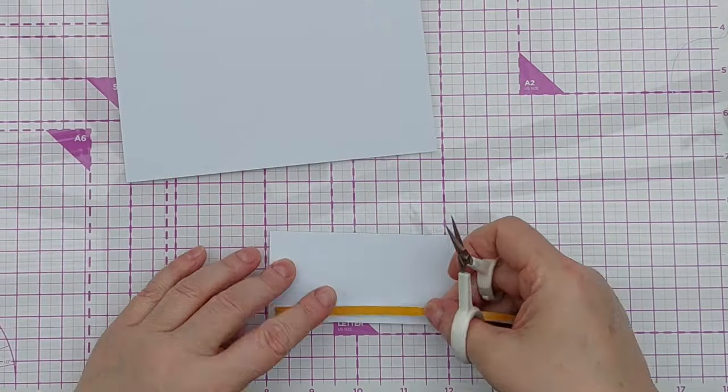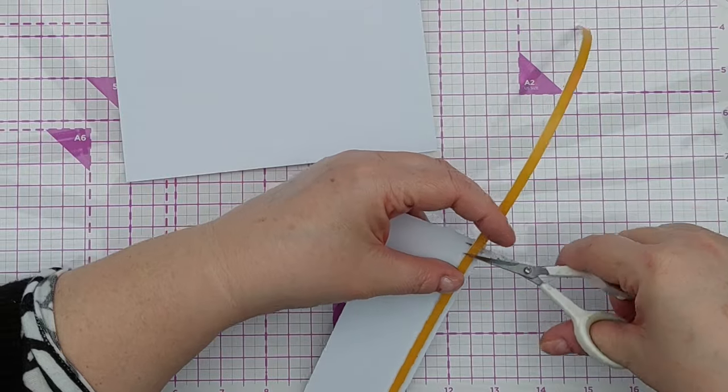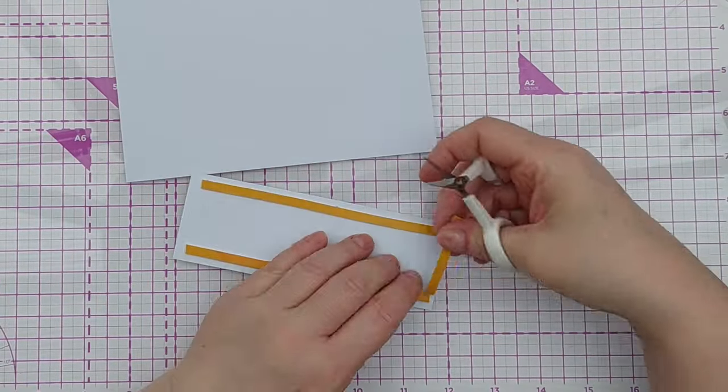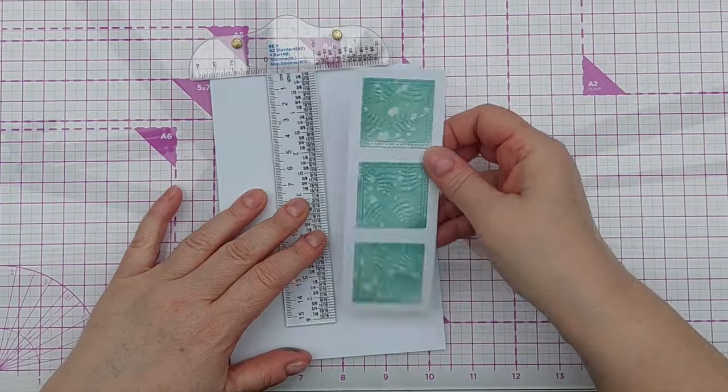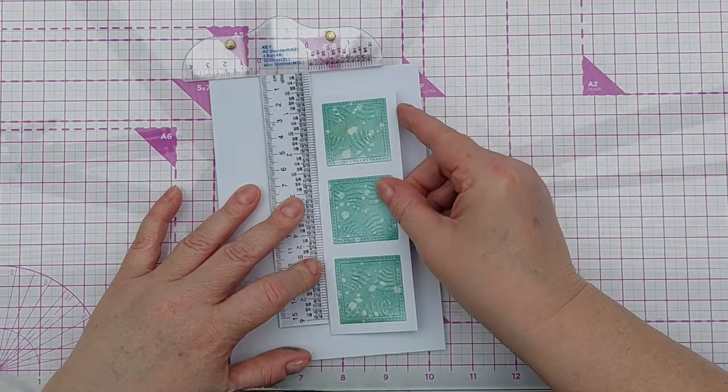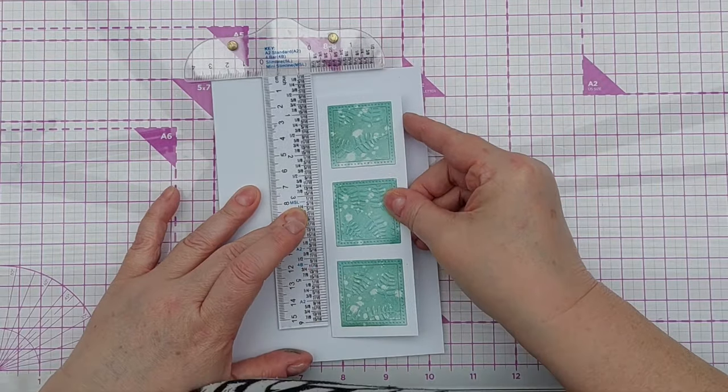After that I added foam tape to the back of the panel so that it would have some dimension once I added it to the card front. Again I pulled out my trusty t-square ruler to help me get my panel on straight.